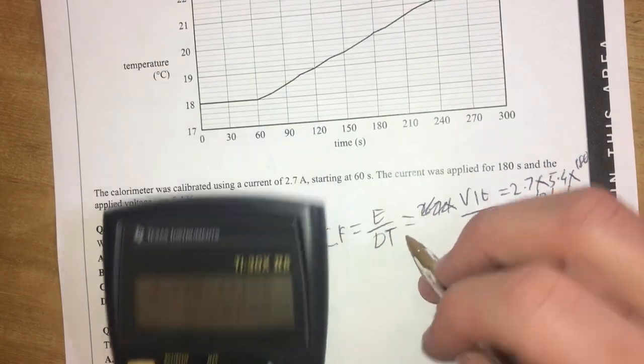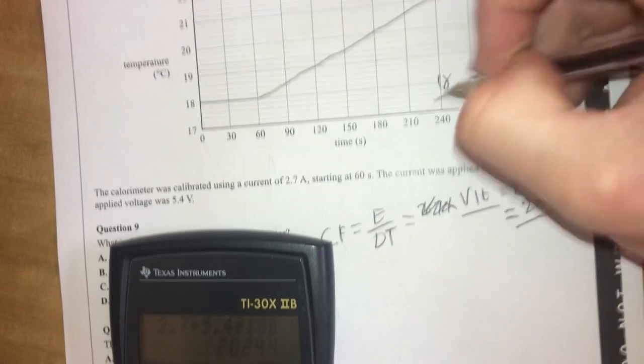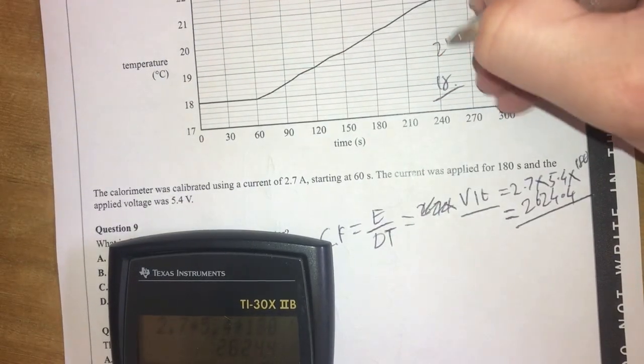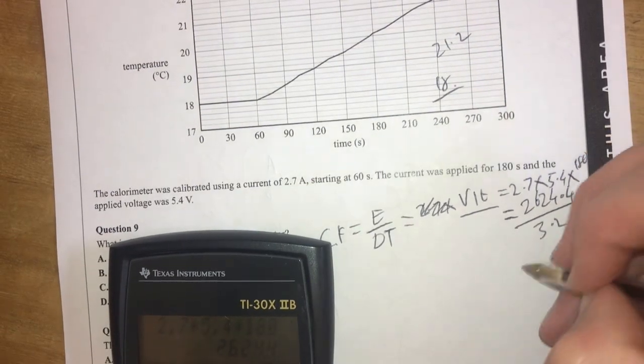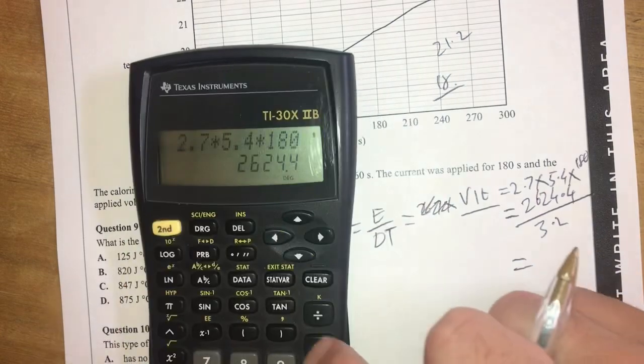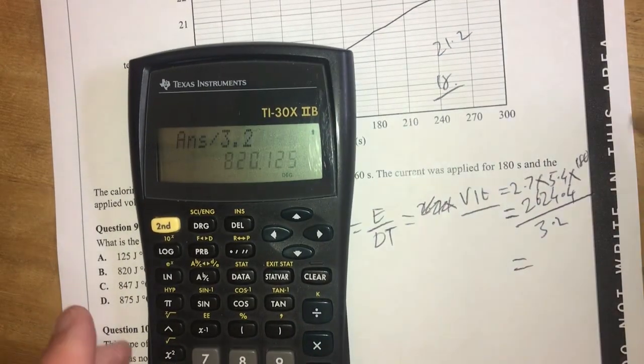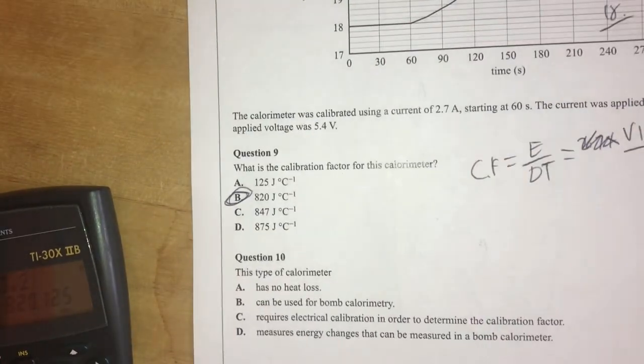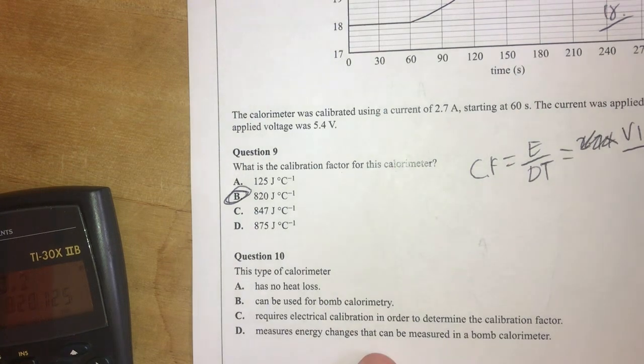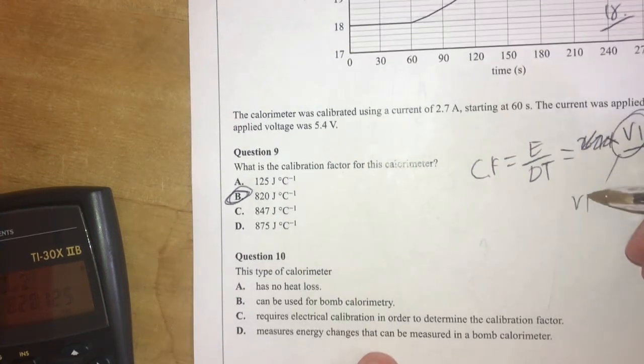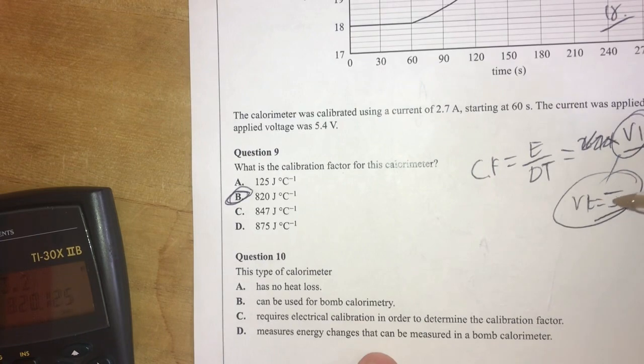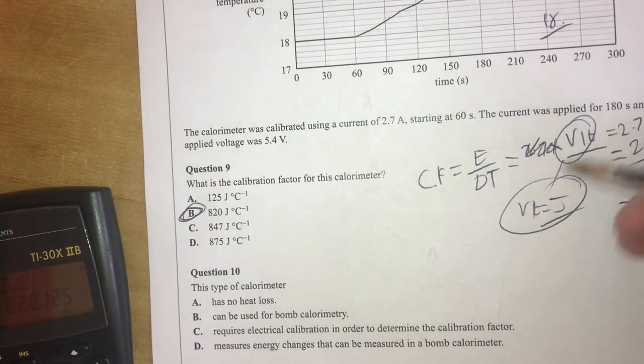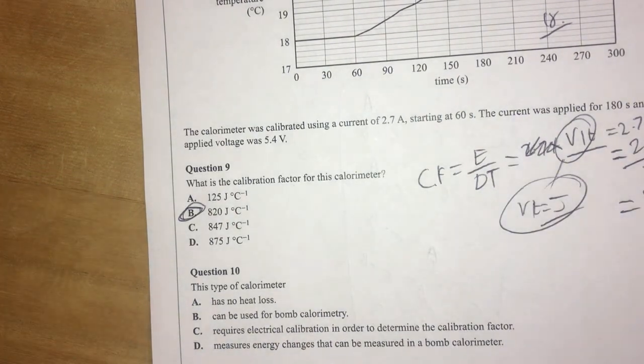All right. So my energy divided by my temperature change. What's my temperature change? It starts at 18. All right. And it goes to 21.2. 21.2. So therefore, it's going to be divided by 3.2. So that answer there, divided by 3.2 gives me 820. So therefore, the answer will be B. 820 joules per degree Celsius. Making sure you know that VIT equals joules. Not so much important in this question, because you only have joules going on there, but if you did this in a short answer question, you need to know what unit your calculations give you.